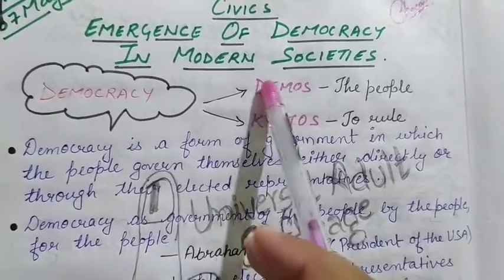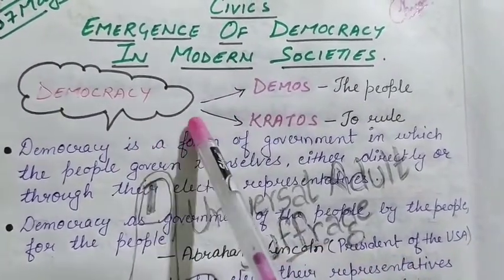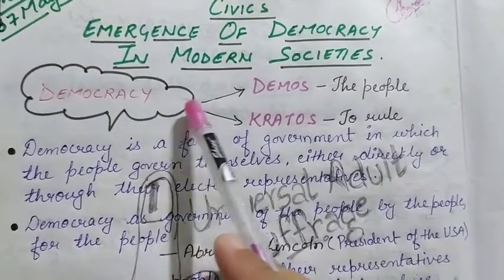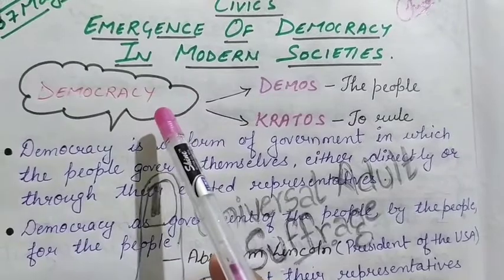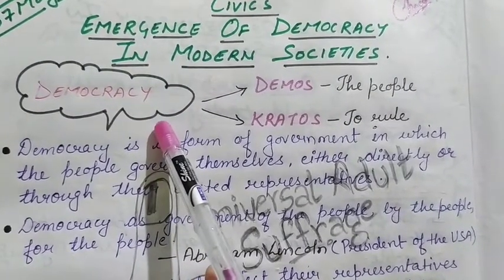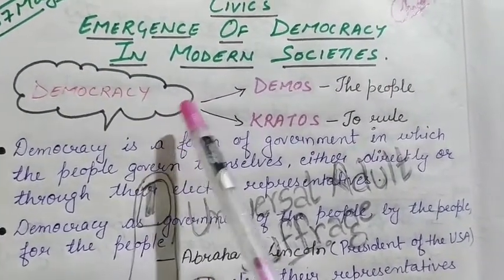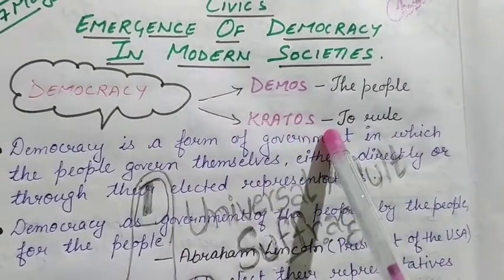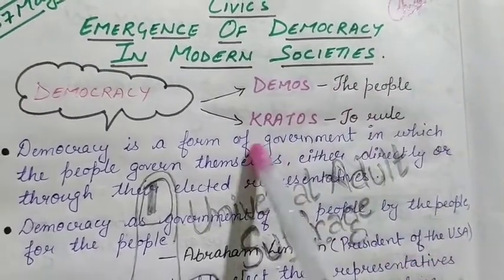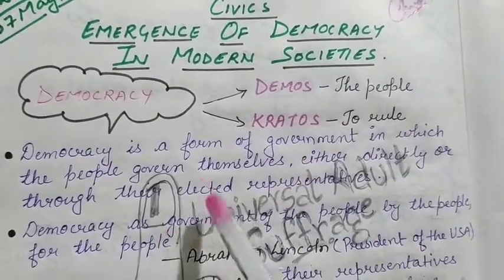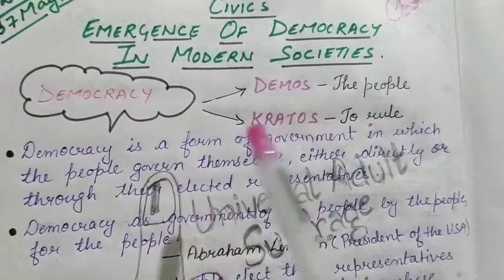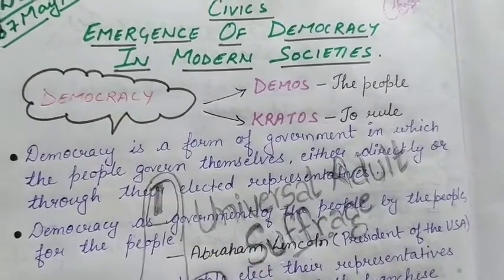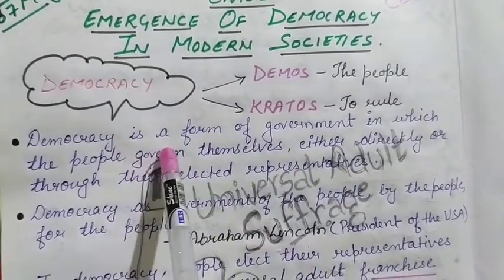Democracy is taken from the Greek word 'demokratia'. Remember, I told you — democracy is taken from the Greek word 'demokratia'. If we divide 'demokratia' into two parts, it gives us 'demos' and 'kratos'. Demos means 'the people' and kratos means 'to rule'. So rule by the people — this system we call democracy.